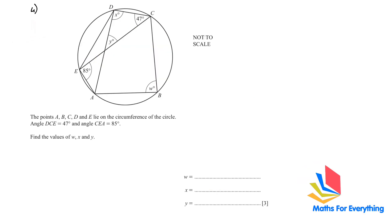Question number 4. The points A, B, C, D and E lie on the circumference of the circle. Angle DCE is 47 and CEA is 85. Find the values of W, X and Y. If you look carefully, you will see that this is a cyclic quadrilateral. In a cyclic quadrilateral the opposite angles equal 180. So 85 plus W equals 180, therefore W equals 180 minus 85, which gives us 95.